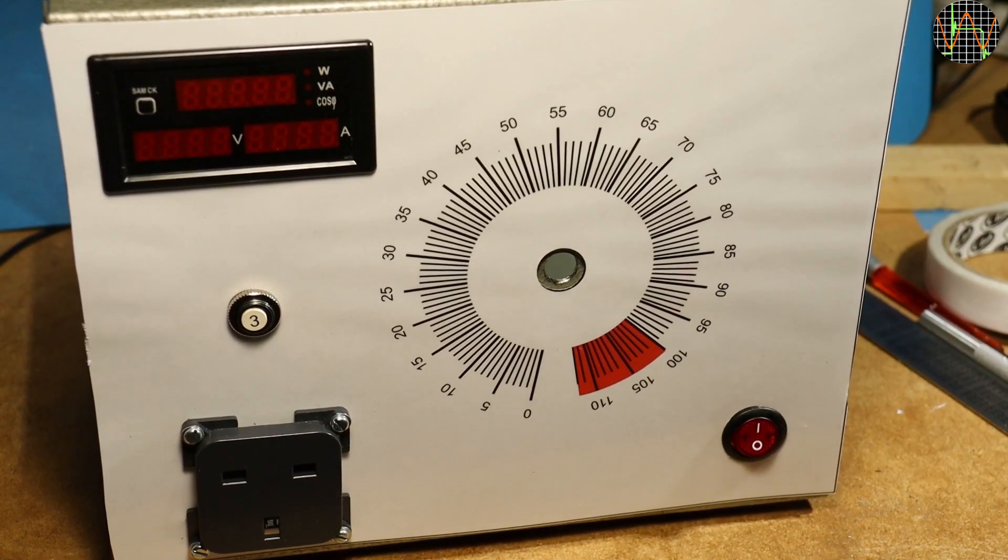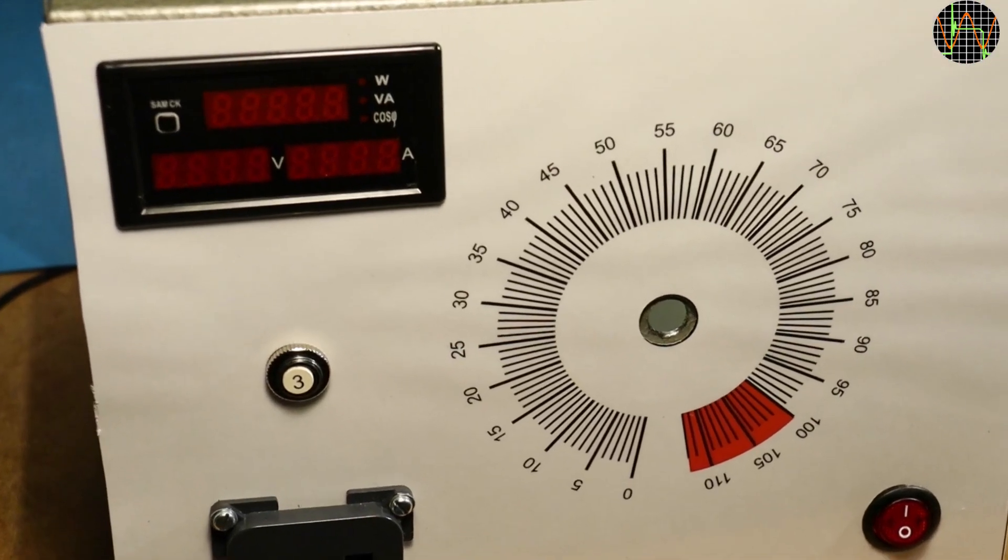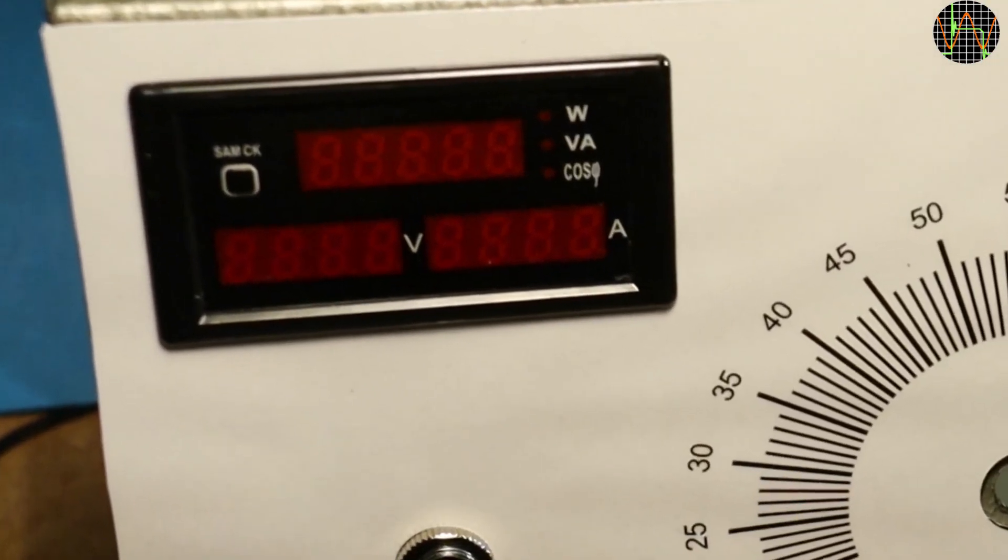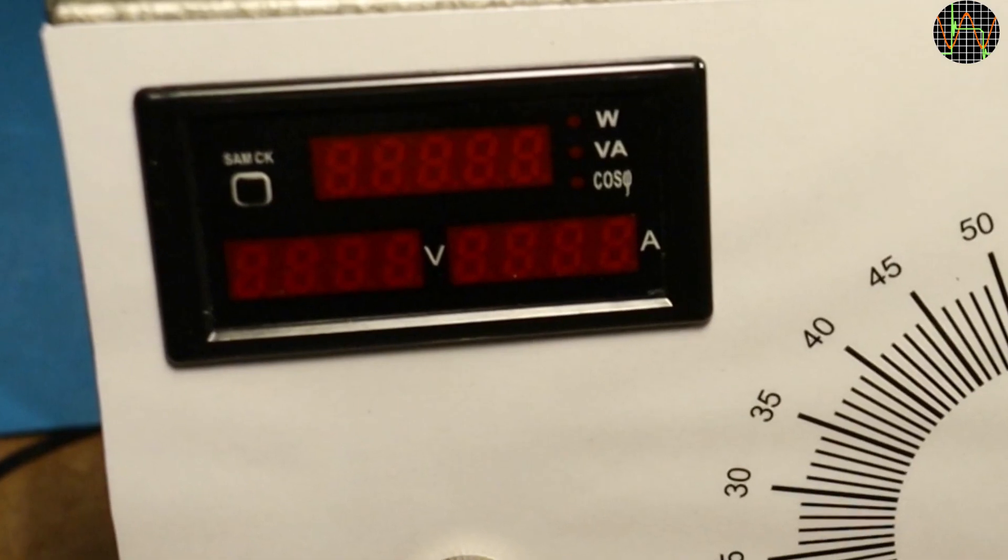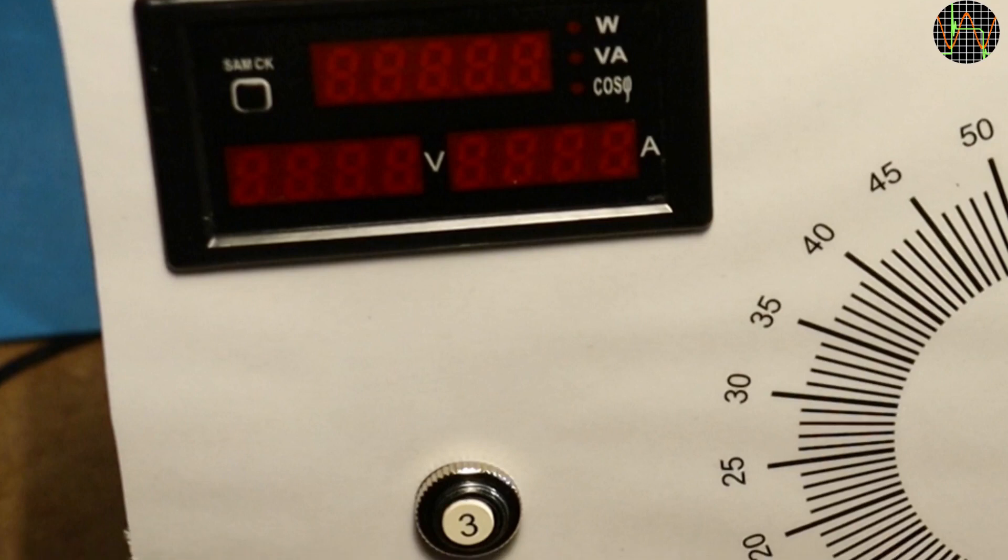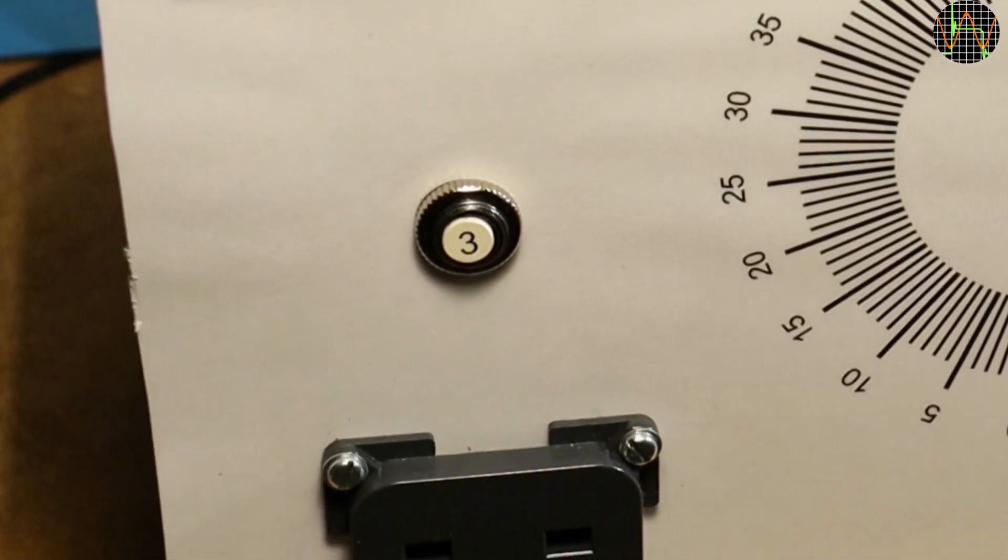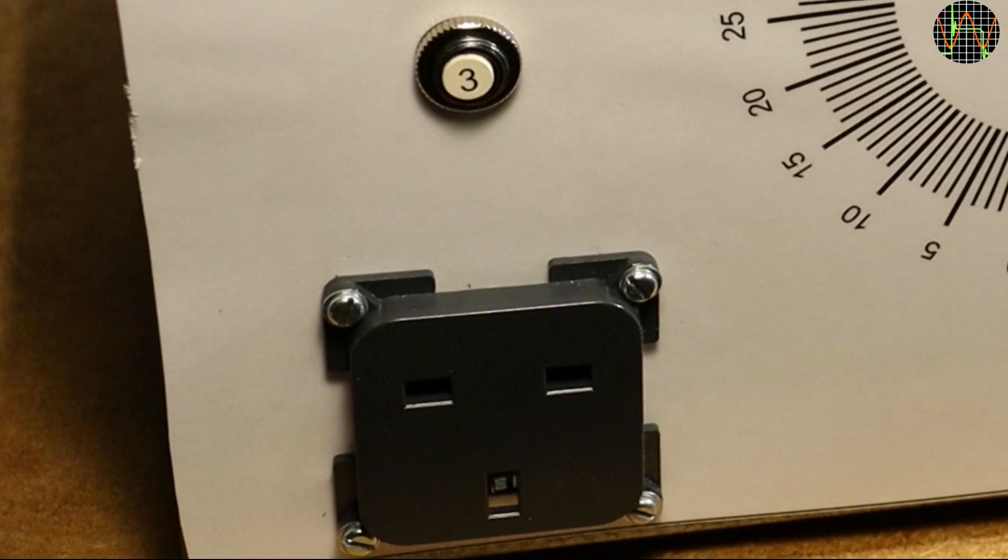This is the front panel fully assembled. The panel meter is the DL69-2048 which I modified in another video so that it has independent supply and measurement inputs. For a VARIAC this is needed because otherwise your panel meter will stay dark until the voltage exceeds 70V or so. The eagle eyed will have spotted that the output socket is upside down. There is actually no right or wrong way with the UK power sockets but it is better if the earth pin is on top because then the plug's cable exits cleanly at the bottom instead of first looping upwards.